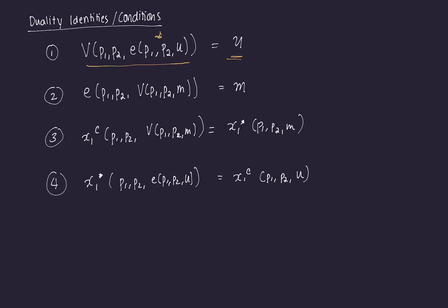Similarly, if we plug the target utility level — obtained by plugging in the Marshallians into the indirect utility function — into the expenditure function, you should be left with just M. If you target the maximum level of utility at the Hicksian level and plug that in for u, you should get the Marshallian demand function. And if you plug the expenditure function into the Marshallian instead of M, you should get the Hicksian demand function. These are the four duality conditions that exist because of the duality between utility maximization and expenditure minimization, linking the two processes both intuitively and mathematically.